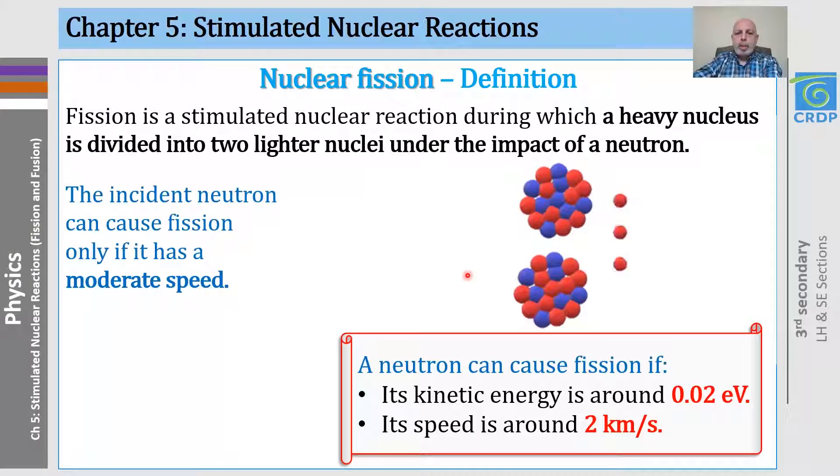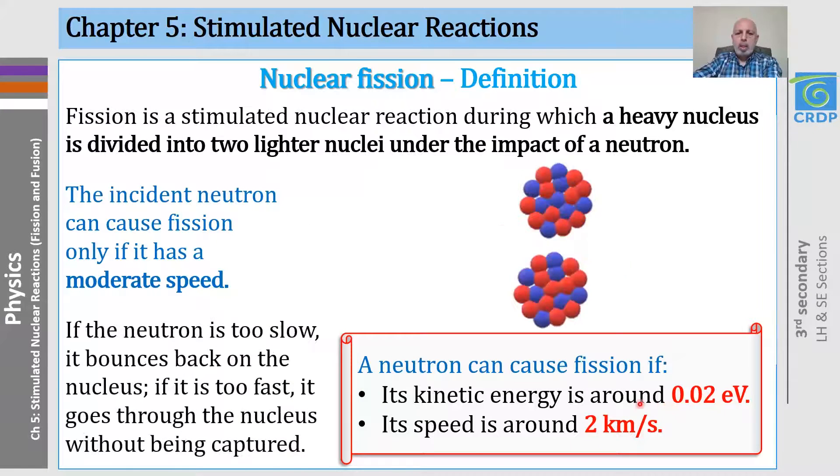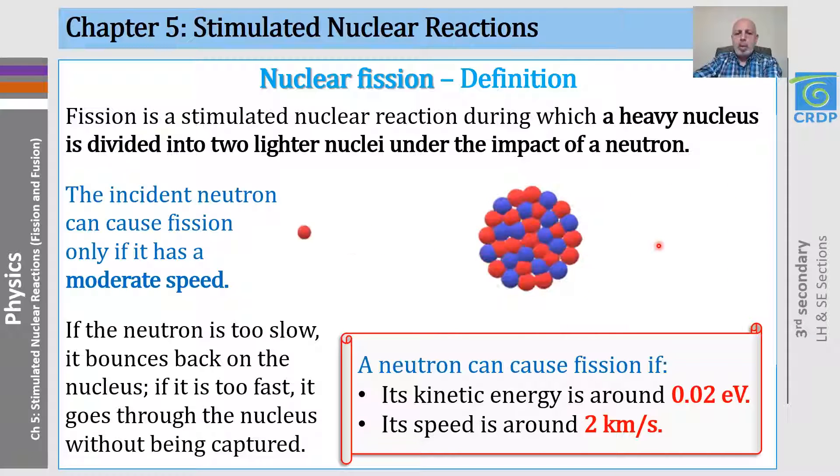The incident neutron to be able to cause fission should have a moderate speed, around 2 kilometers per second and a kinetic energy around 0.02 electron volts. Because if the neutron is too slow, it bounces back on the nucleus, and if it is too fast, it goes through the nucleus without being captured.